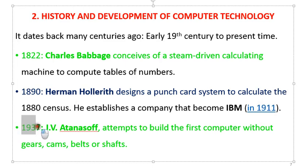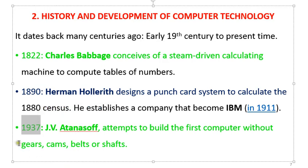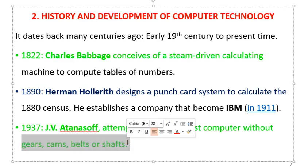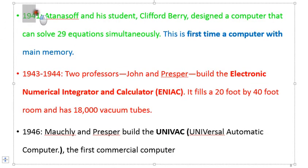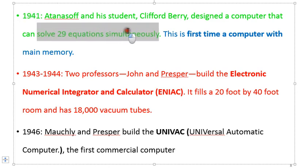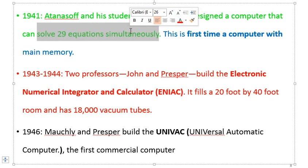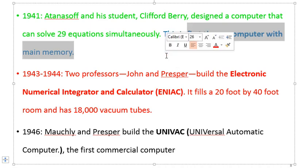In 1937, another scientist, Atanasoff, attempted to build a computer that was not mechanical in nature — without using gears, cams, belts, and shafts, which are common features of a mechanical machine. In 1941, the same Atanasoff and his student Clifford designed a computer that could solve up to 29 simultaneous equations. This was the first computer developed with a main memory. Therefore, the work of Atanasoff and Clifford in 1941 marks the beginning of the complex computer.